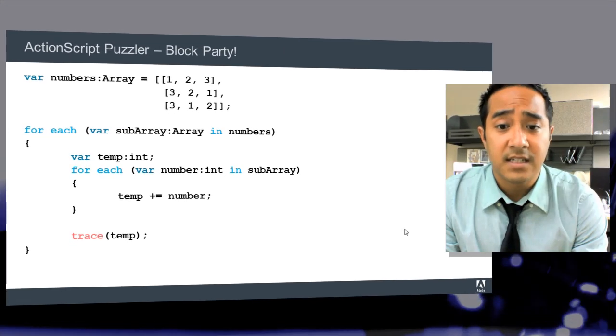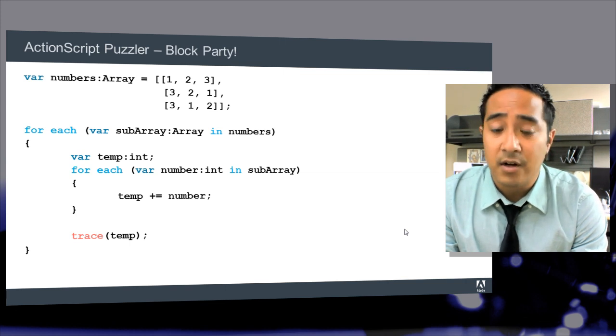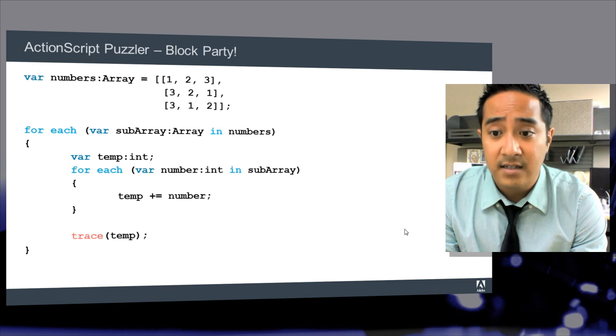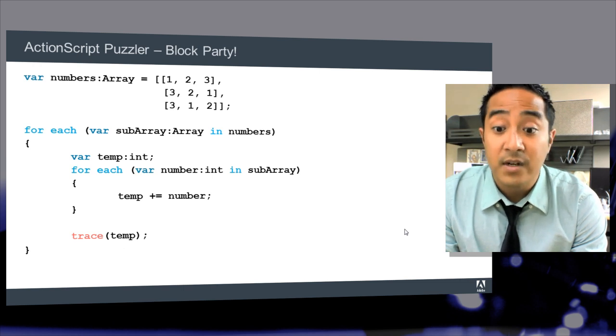So here's the code. As you can see, it's pretty straightforward. It's only about 15 lines of code, and it doesn't do very much. You'll notice that there's a two-dimensional array declared at the top. There are two for each loops and a single trace statement near the bottom. Take a few moments to read it through for yourself.